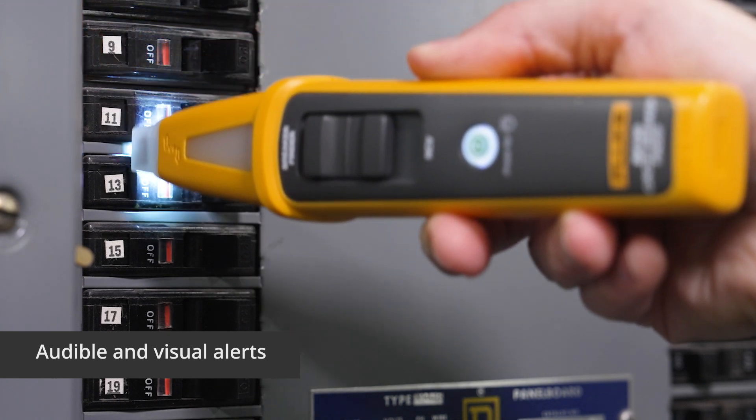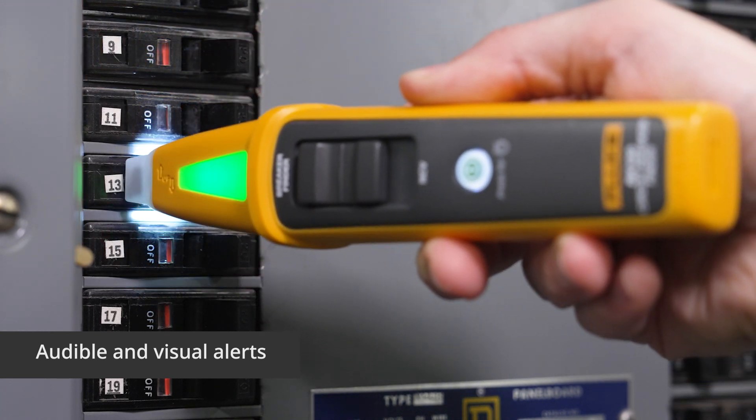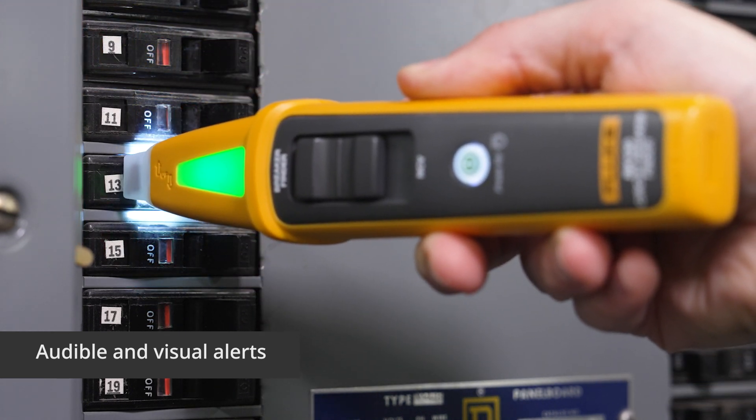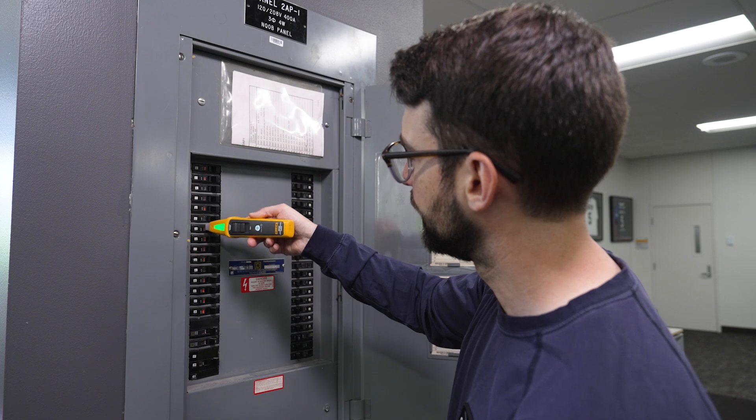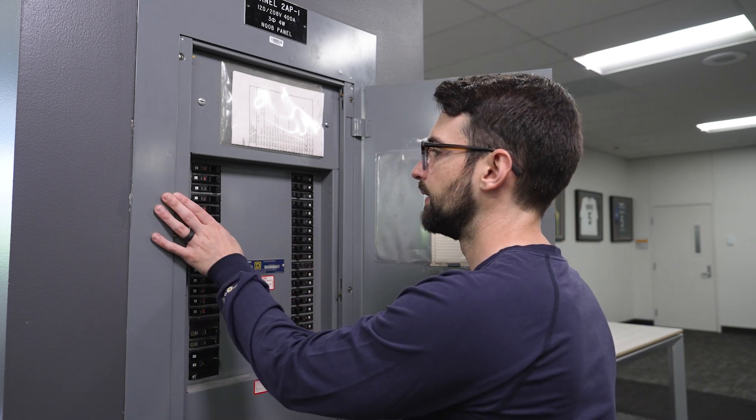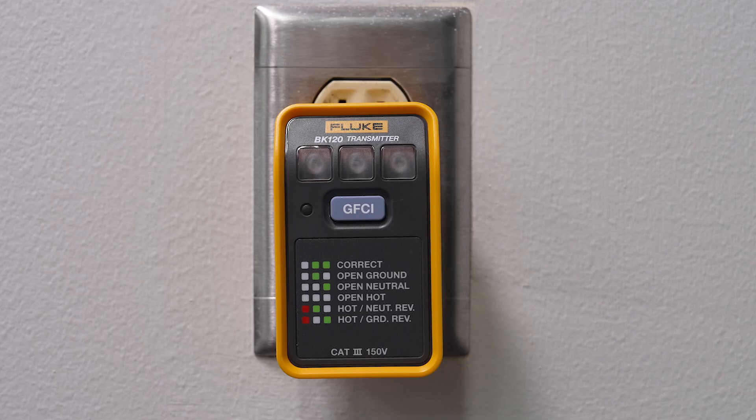We're getting close to finding the breaker we're hunting for. That green light means we've narrowed in on our breaker. We'll confirm we've got the right one by flipping the breaker and checking that the transmitter is now off.